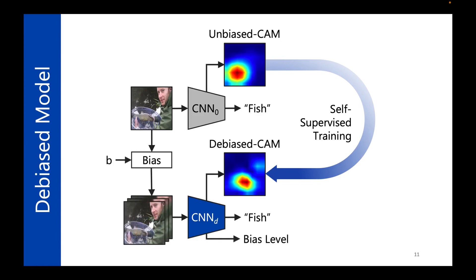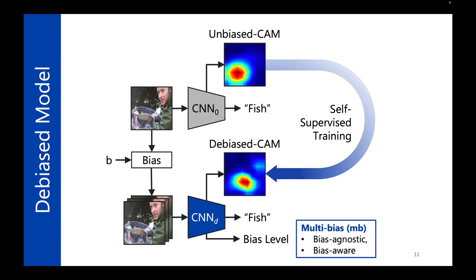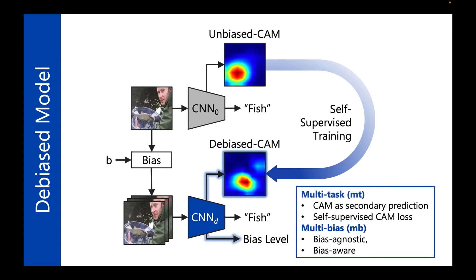Our approach also supports a more realistic multi-biased setting, where training images are augmented to different blur bias levels, and the model needs to predict that bias level information as a third task. Bringing all these features together, we designed a multi-task, multi-biased architecture.